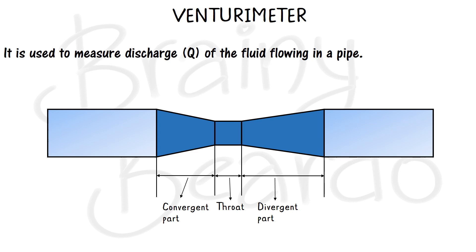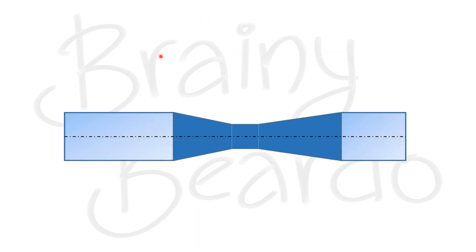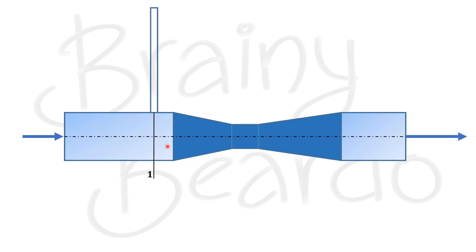Let us consider a Venturimeter where fluid is entering from the left side and flowing through the right side. Close to the inlet of the convergent part inside the pipe, let us assume a section and call it section 1. We will fix a piezometer at this section. Because of the fluid pressure at section 1, the fluid rises through the piezometer to a height h1, which indicates the pressure of the fluid at section 1.